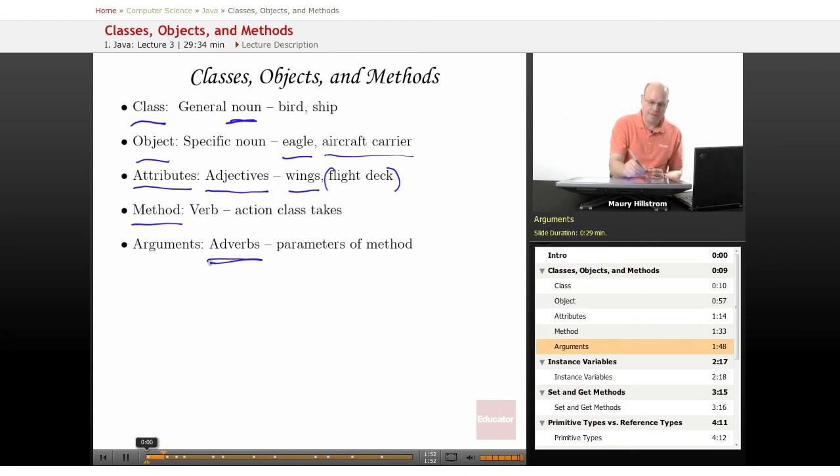These methods will often have parameters, which we call arguments. And arguments are the parameters of the method. So if we say that the eagle, for example, can fly, we might want to know how fast or how high. Same thing with an aircraft carrier, with a ship. How fast is it moving? What direction is it moving? Things like that are arguments when it comes to methods.